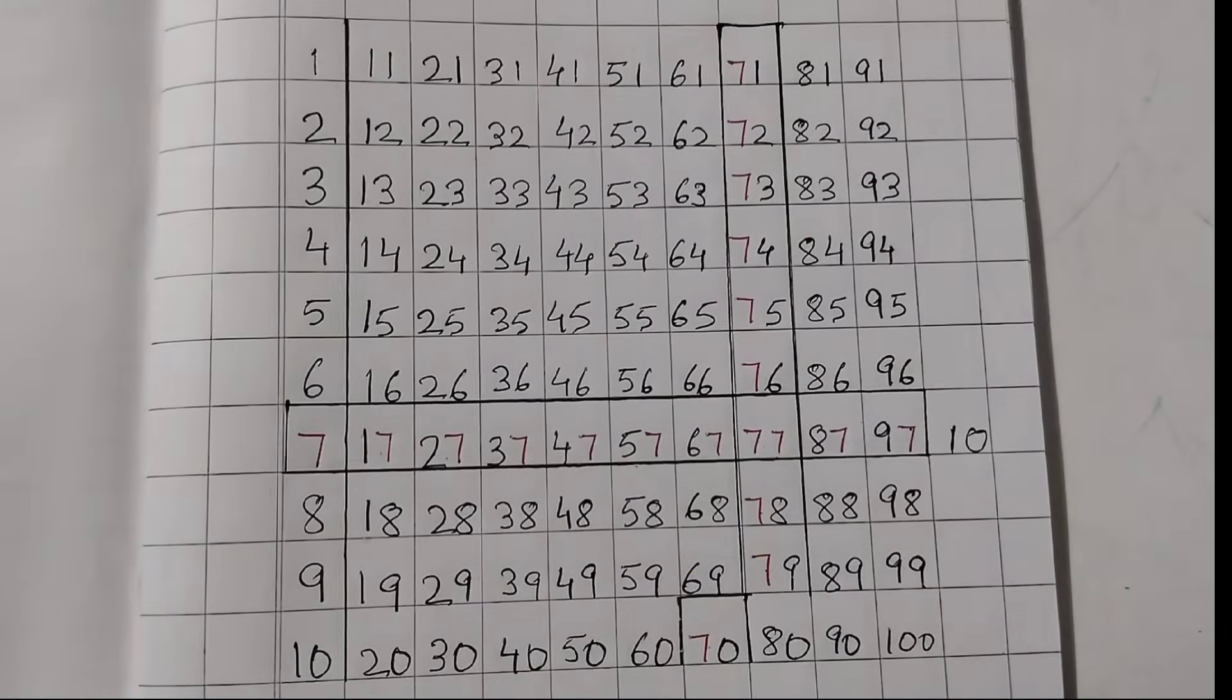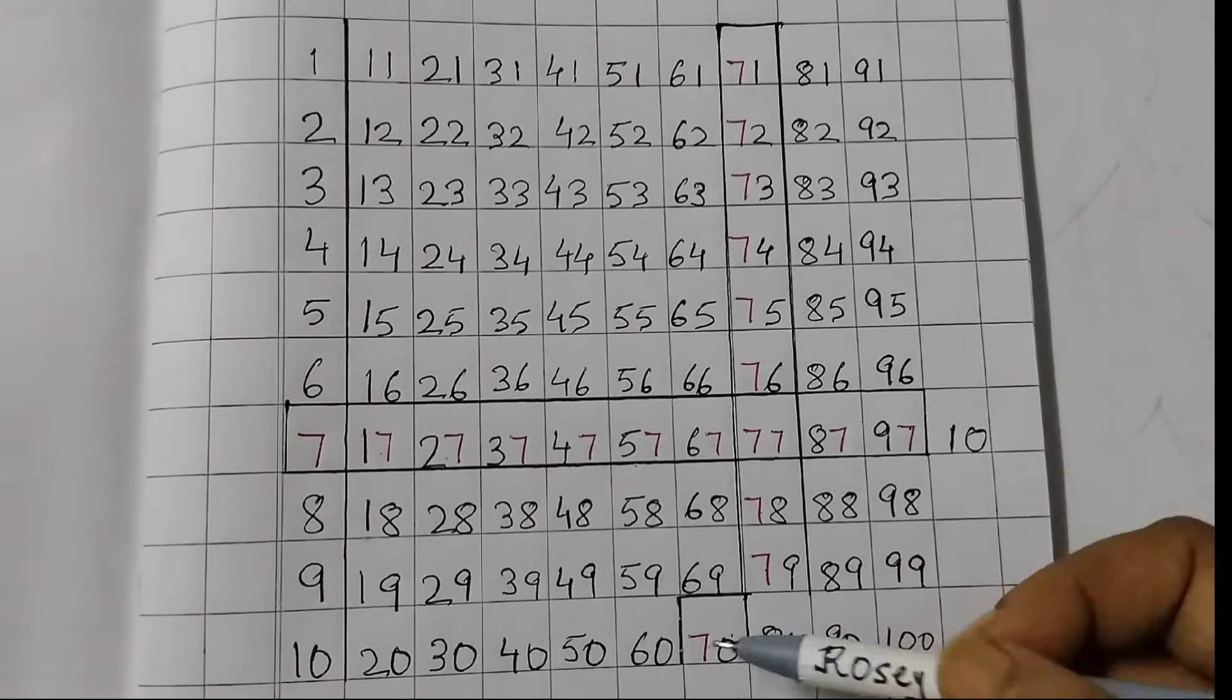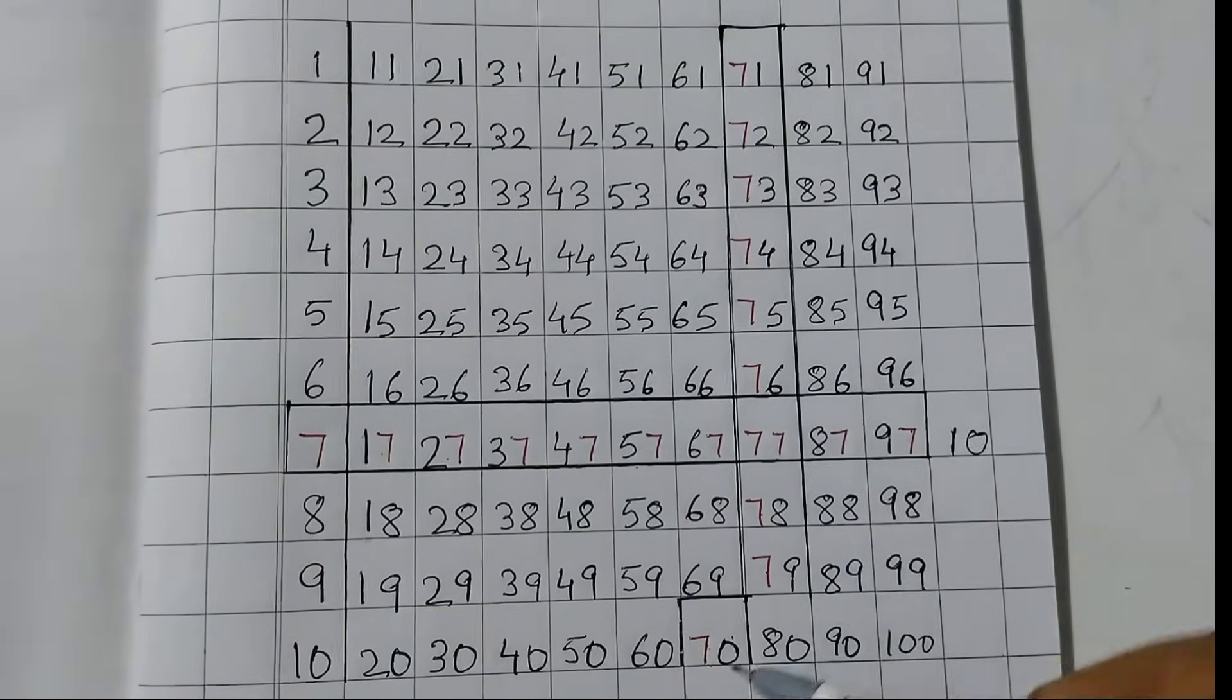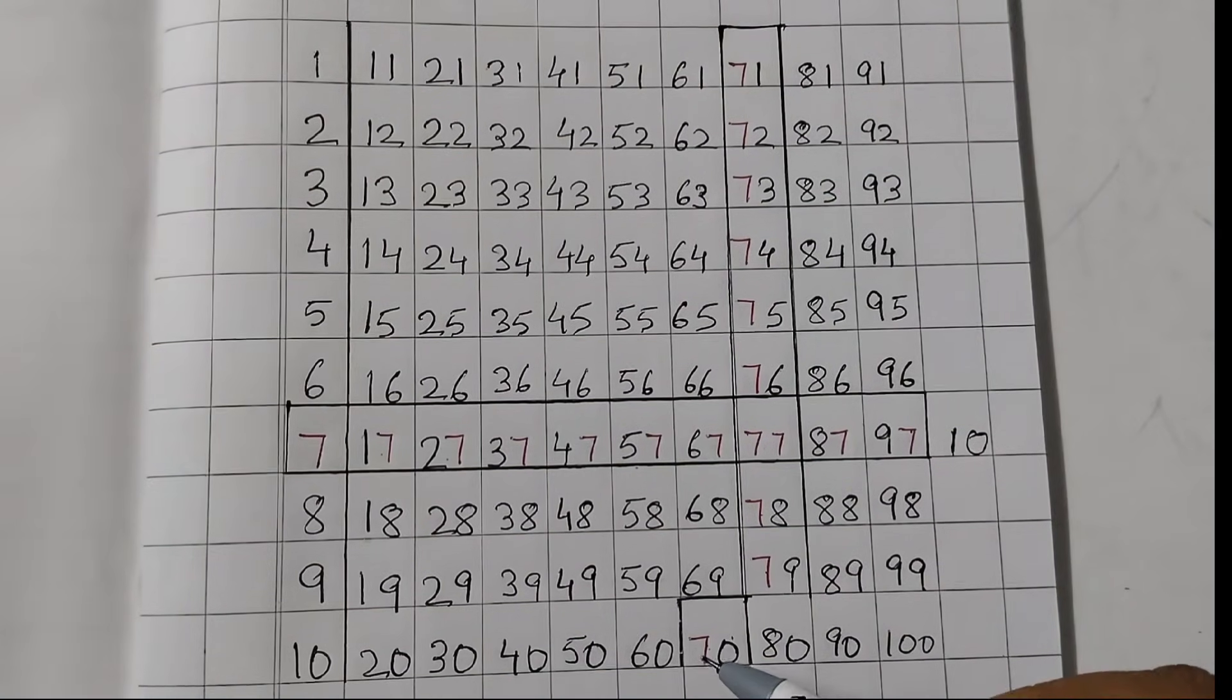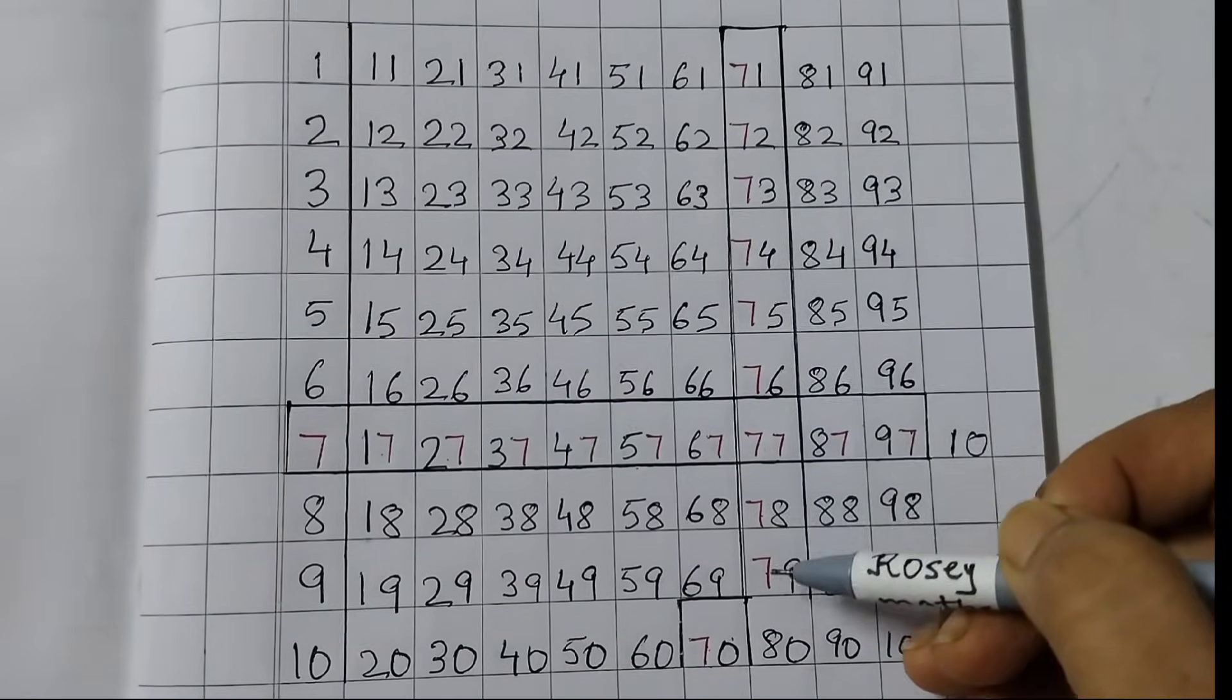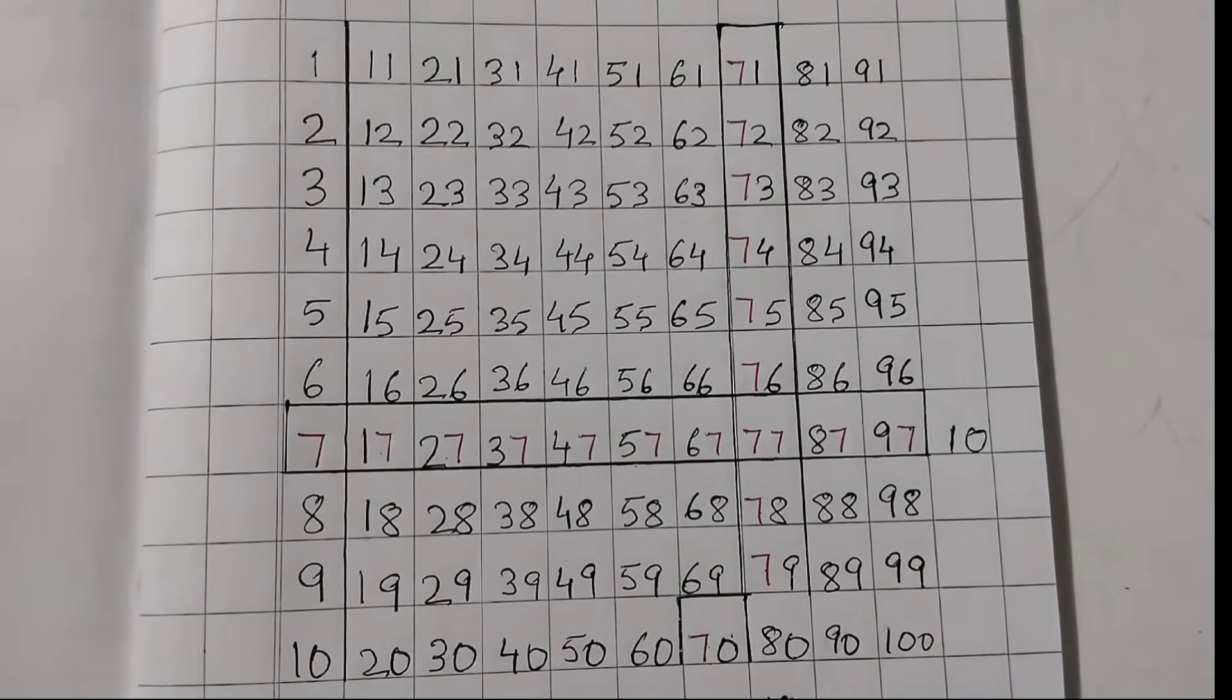And now, if you see the tens place, this is the tens place, ones, tens, right? Here we have 70, 71, 72 till 79. To find out the tens place: 1, 2, 3, 4, 5, 6, 7, 8, 9, 10. So, this is again 10 times.